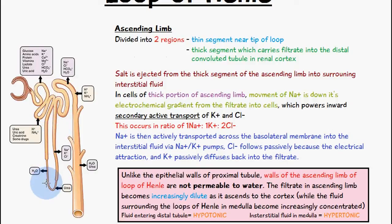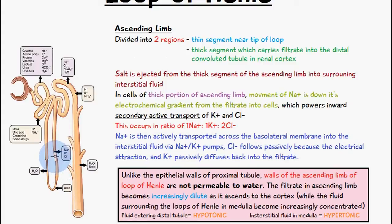To begin this video on the loop of Henle, we're going to first talk about the ascending limb. We can divide the ascending limb into two regions: we have the thick and thin segment. The thin segment is just after the initial loop, and then we have the thicker segment. This thick segment of the ascending limb carries the filtrate to the distal convoluted tubule, which is located in the renal cortex.